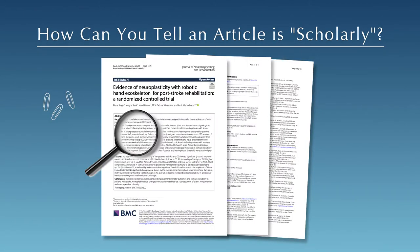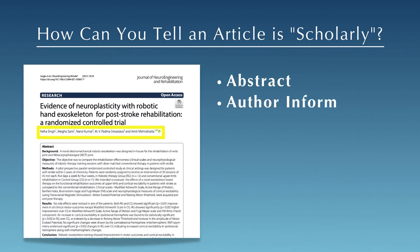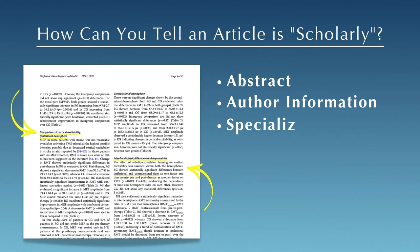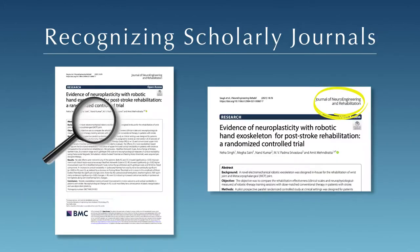So, how can you tell if an article is scholarly? Here are some common features to look for: an abstract, or single-paragraph summary of the research, appearing at the beginning of the article; information about the author's affiliations and credentials; specialized language or terms in the body of the article; and a list of references — sometimes called works cited or bibliography. This list of references can also be a great place to find additional sources for your paper.